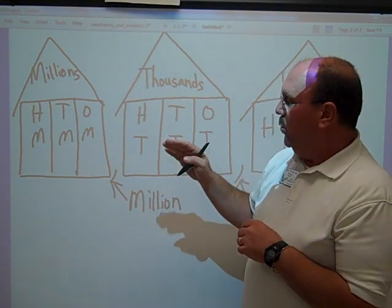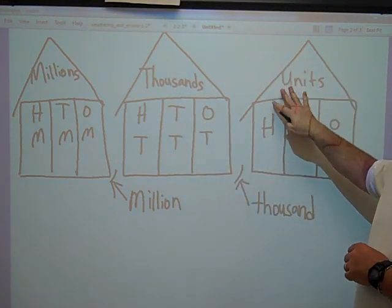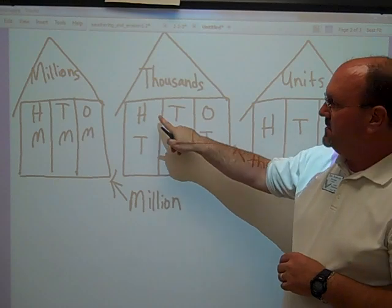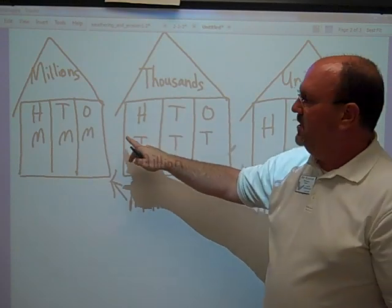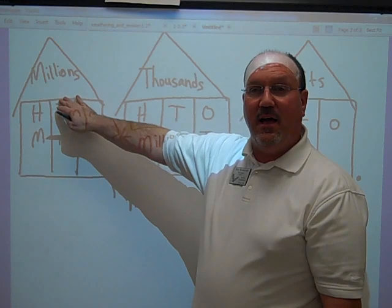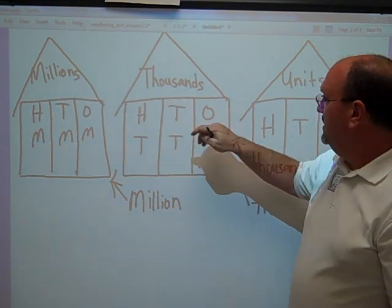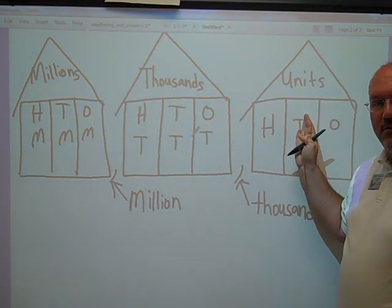Ones, tens, hundreds are all in the house. Ones, tens, hundreds are all in the house. Millions on the left, thousands in the middle, units on the right because they are so little.